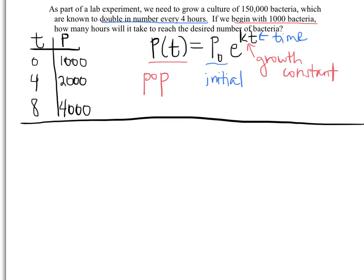Our population after a certain amount of time, well you can use either 2000 or 4000, whatever one you want to use. I'm going to use the 2000 though since that's our first one we made up. Our initial population is 1000. We've got our e, k we don't know, and our time is four hours.